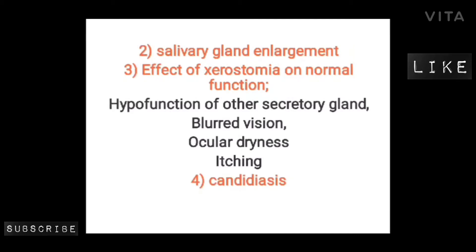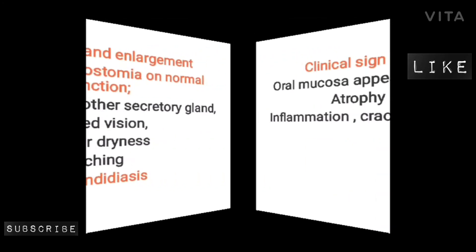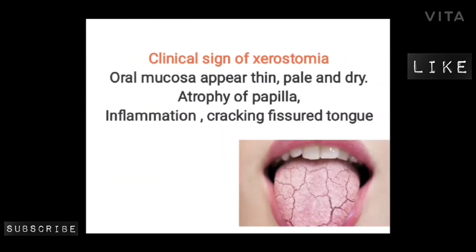Xerostomia also leads to candidiasis. The clinical signs of xerostomia include oral mucosa appearing thin, pale, and dry; atrophy of papilla; and inflammation, cracking, and fissured tongue.